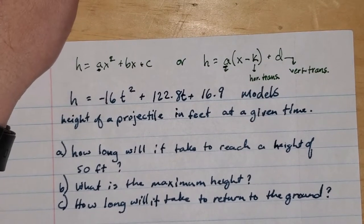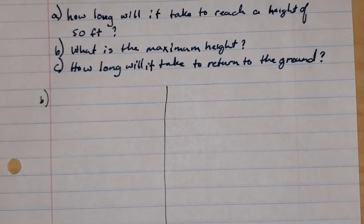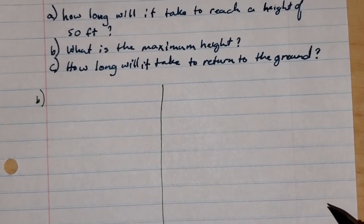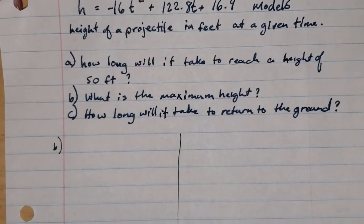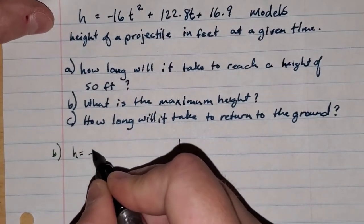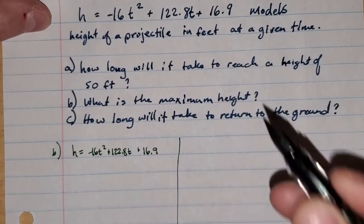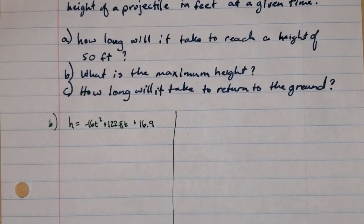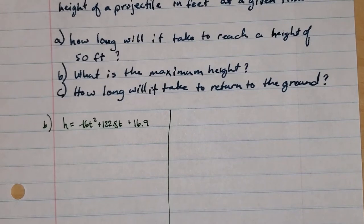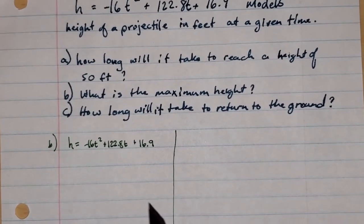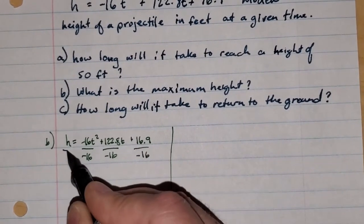We're going to start with part B. If you've watched my video on how to complete the square or put an equation in vertex form, we're going to do the same thing, except this time with messy numbers — this is how you'd do it in a physics class, not a math class. We'll take this polynomial: H equals negative 16t squared plus 122.8t plus 16.9. First, we need to make the leading coefficient equal to one by dividing everything by negative 16.